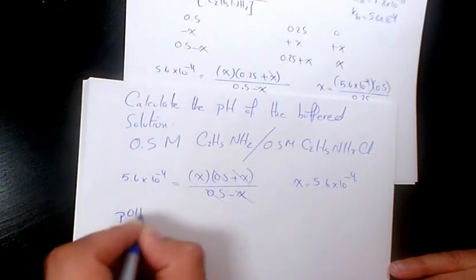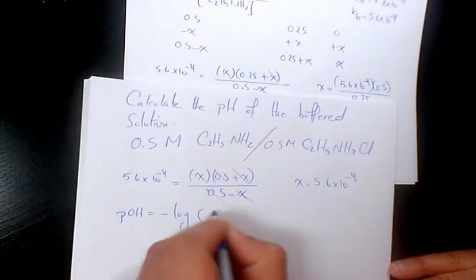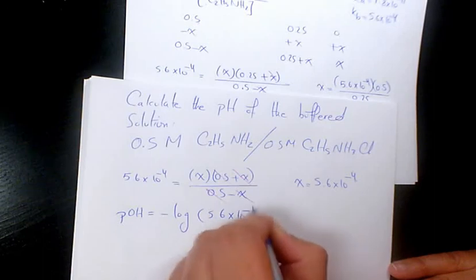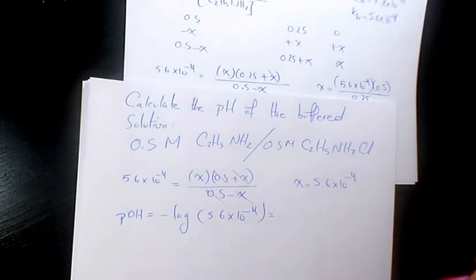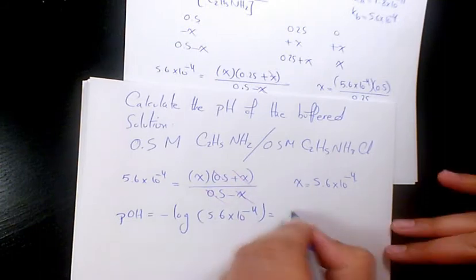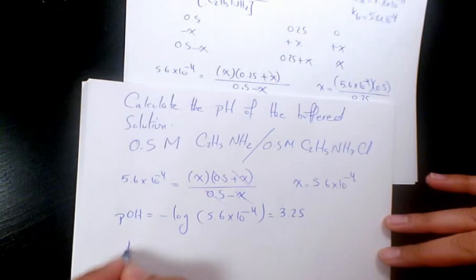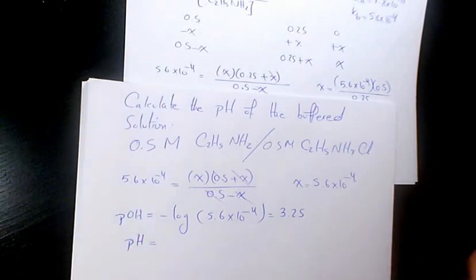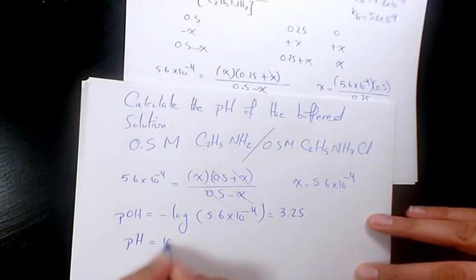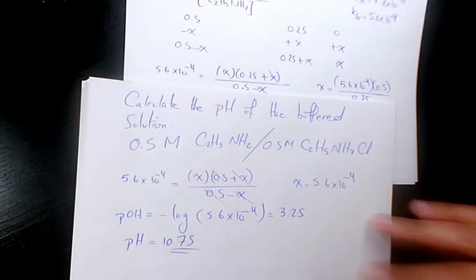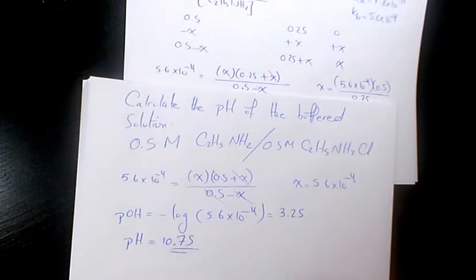So pOH is gonna be negative log 5.6 times 10 to the power of negative 4. That's gonna be 3.25. So pH will be 14 minus 3.25 which is gonna be 10.75. That's gonna be the pH of this third solution.